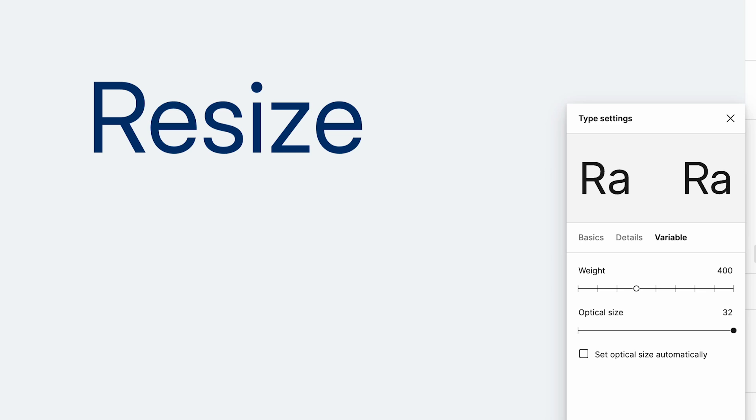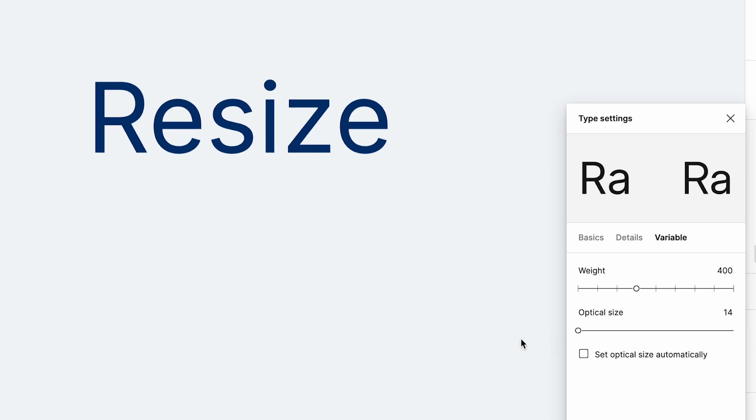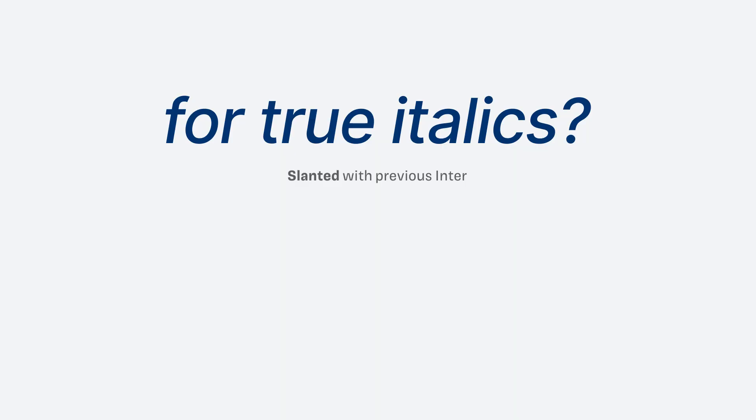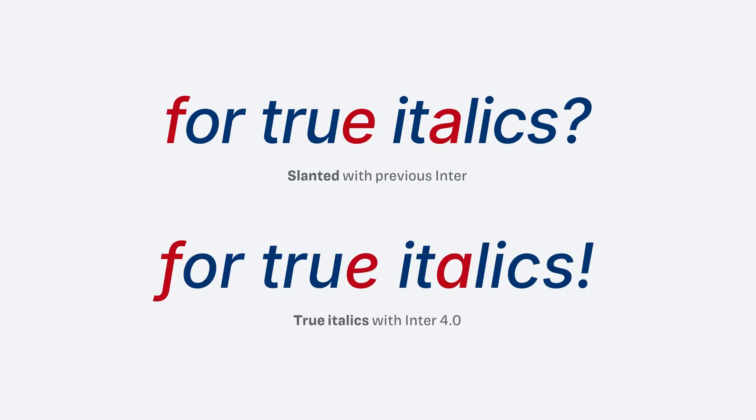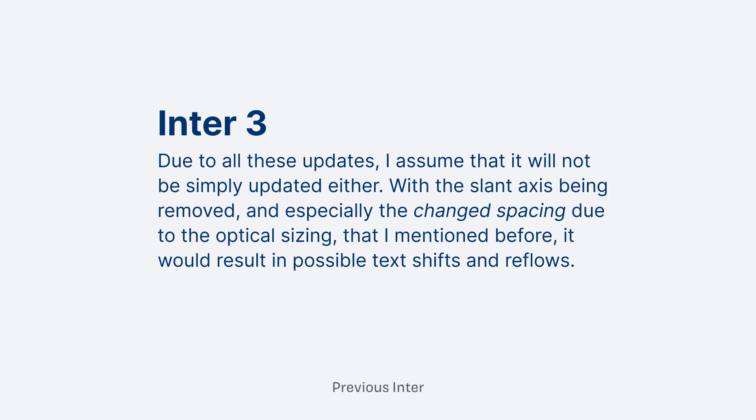In my latest video, I talked about the changes that came with the update to version 4 of the popular typeface INTER. Along with significant improvements like optical sizing, INTER 4.0 also changed its flavor quite a bit by replacing the slanted italics with true italics. I assumed it would not simply be replaced by Google Fonts, because this might result in text reflow at best and a loss of functionality at worst. But I was wrong. It happened.